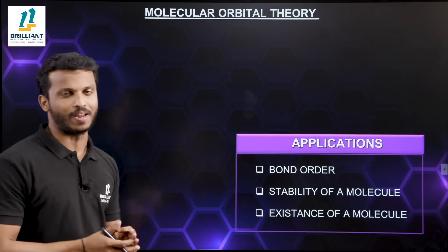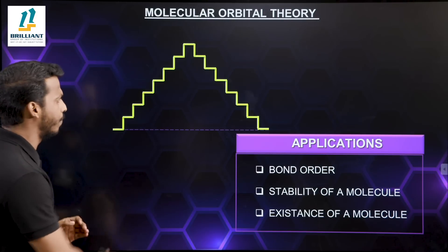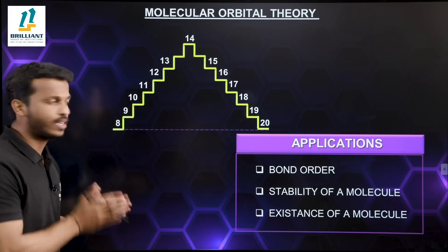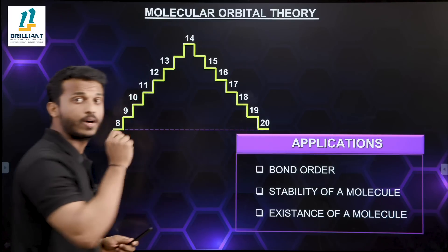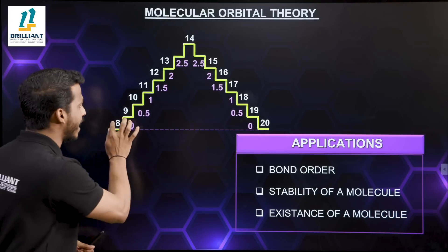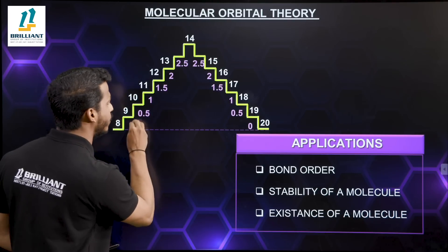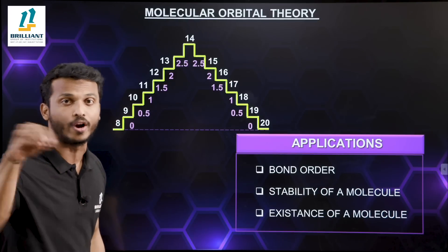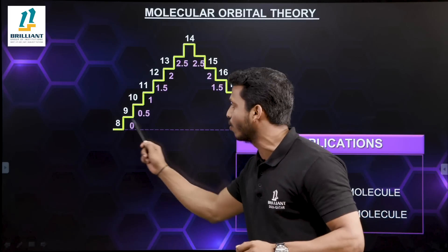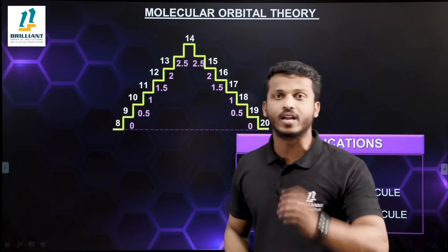In order to apply this trick, we need a pyramid. Let me start from the eight-electron system. The numbers 8, 9, 10, up to 20 represent the number of electrons, and the numbers placed inside are the corresponding bond orders. If the number of electrons in the molecule is eight, the bond order is zero — meaning there is no bond. If the number of electrons is nine, the bond order is 0.5.